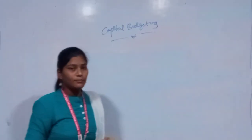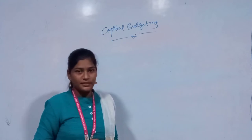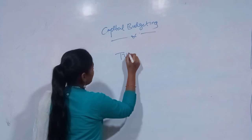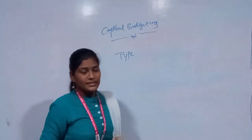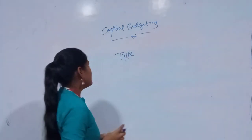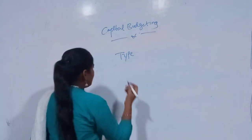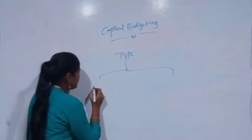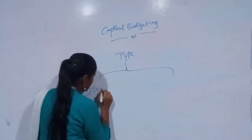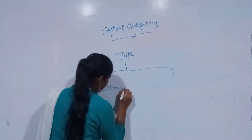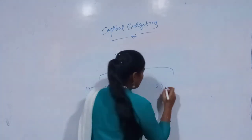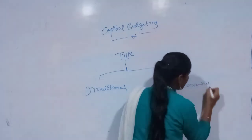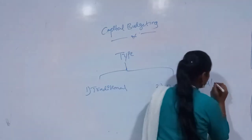Now comes the most important part of this session — the types of capital budgeting techniques. We have several types, but we basically divide them into two types with some sub-types. The first one is traditional approaches, and the second one is non-conventional, which we can also call discounted cash flow methods.